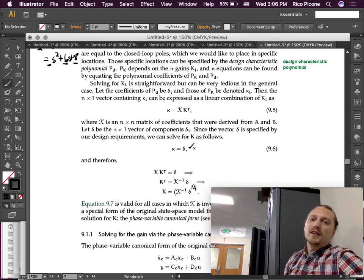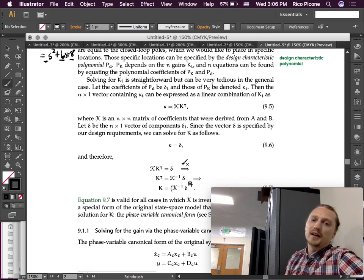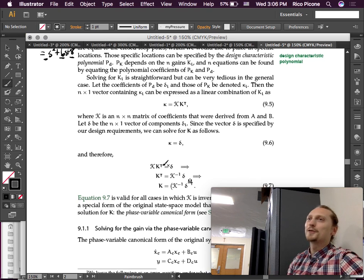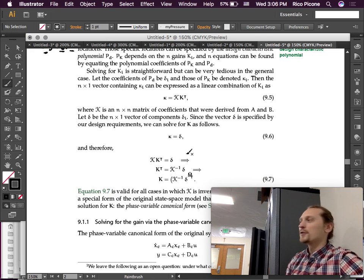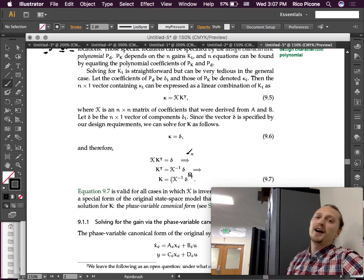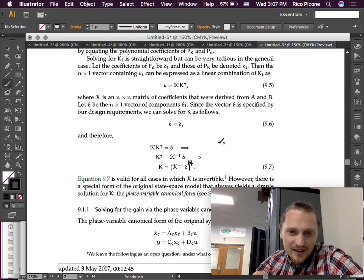We know that kappa is supposed to equal delta. And therefore, we can say, we'll just stick 9.6 into 9.5, so we'll say kappa is equal to delta. So, script K times k transpose equals delta. And you guys are thinking, oh shit, linear algebra again, right? Yes. Linear algebra again. You thought you were done with that with me. But now, even more linear algebra. Here we are with transposes and inverses.